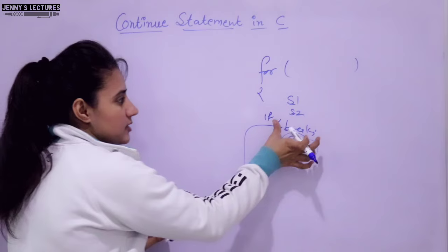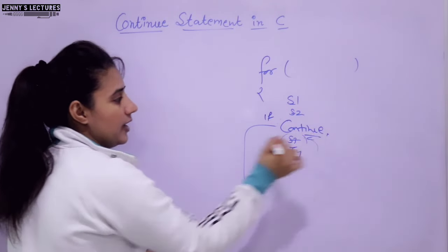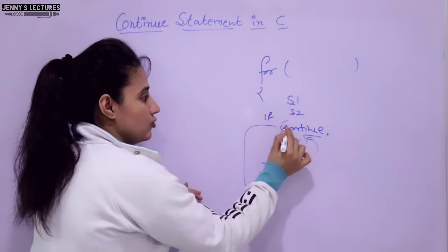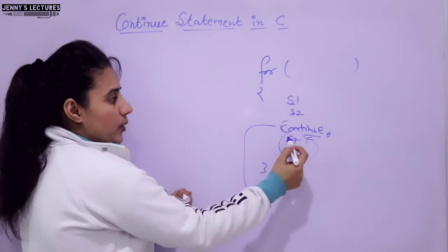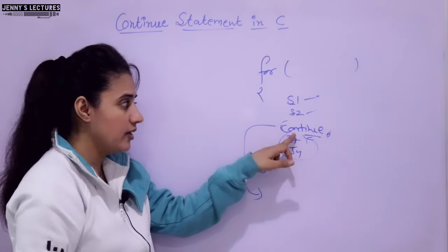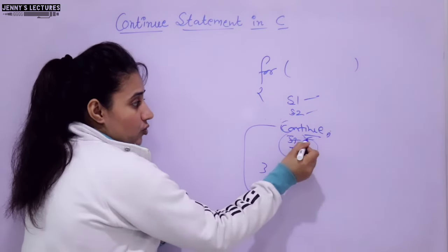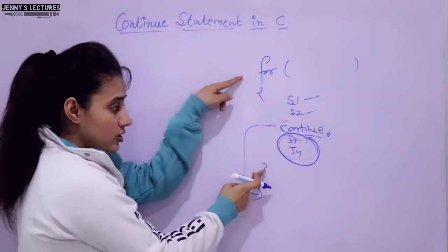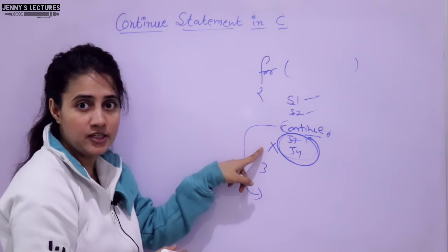Let us discuss it with an example. Here I am writing continue. The syntax is simply: you write 'continue' - this is a keyword in C, so it will be in small letters - followed by a semicolon. Now as soon as continue is encountered within a loop, statement 1 would be executed, statement 2 would be executed. As soon as continue is encountered, control will skip the remaining statements - whatever statements are written after this continue within the loop.